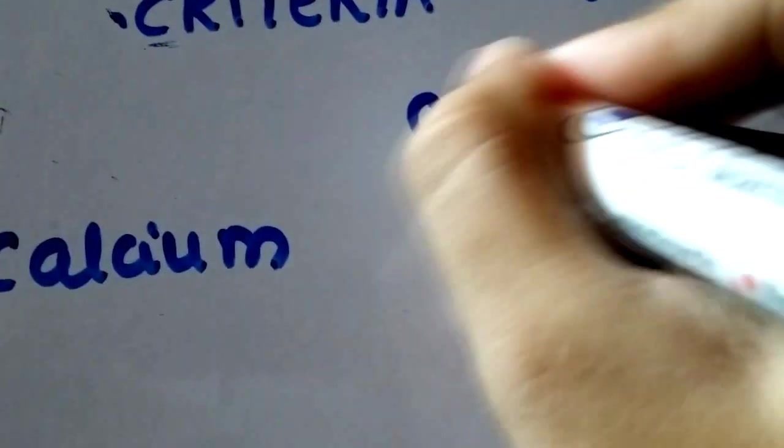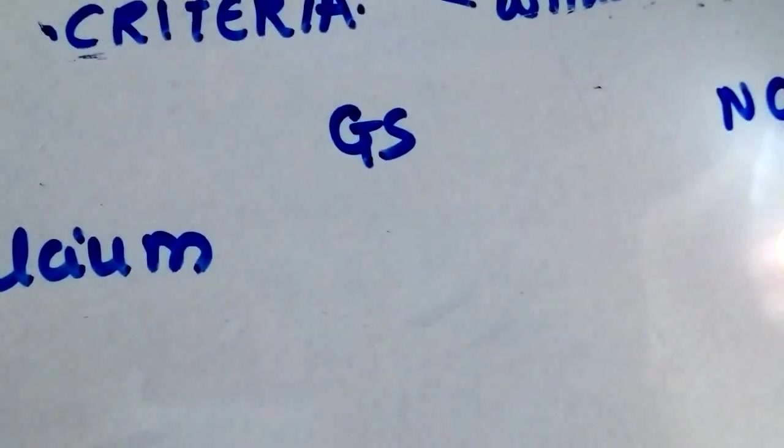So C is for calcium. And again, we have the gallstone criteria and the non-gallstone criteria.